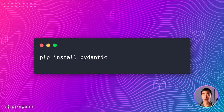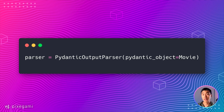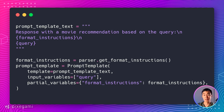First, you're going to have to install the Pydantic library if you haven't already, because we're going to use this to define the structure of our output model. Once you've installed it, you can create a Pydantic model for your movie object like this. You can specify each field, what data type that field should be, and a description of the field so that the LLM knows what it should put in there. Next, create a parser using the PydanticOutputParser class, and then pass in the Pydantic model that you just made. Then define a prompt template that instructs the LLM on how to format the output. The parser actually has a helper method for this called GetFormatInstructions.